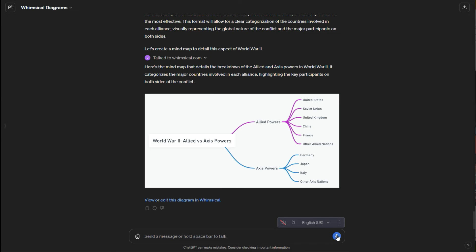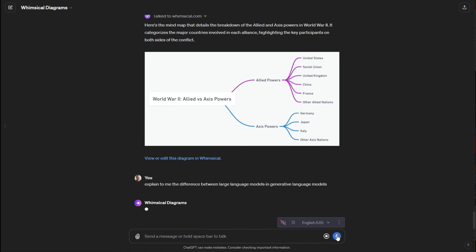And just to expand on some other prompts that we could do, I like to talk to this, but you could write it out. But generally, what I start with is I'll say something like an action, make a diagram or explain to me. So I'll say, explain to me the difference between large language models and generative language models.